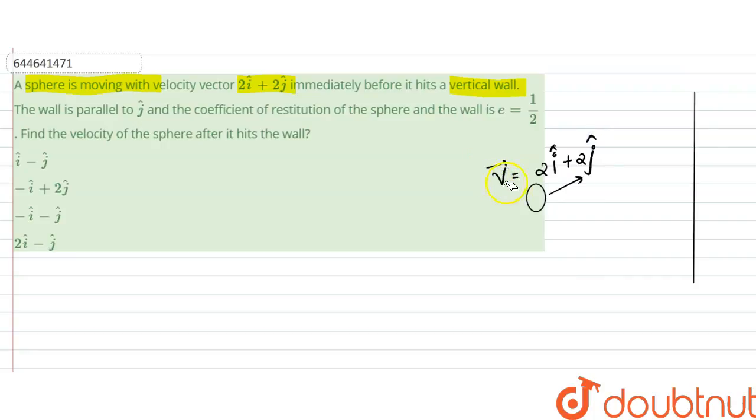So we can write it as u. Immediately before it hits the vertical wall, the wall is parallel to j, and the coefficient of restitution of the sphere and the wall is equal to half. So the coefficient of restitution here is half. The velocity of the sphere after it hits the wall is what?